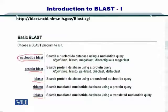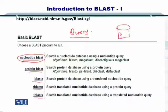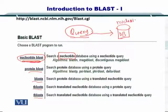For nucleotide BLAST, you simply search for nucleotides. You have a query nucleotide sequence — the query is the sequence that you are trying to search within the database. In the case of nucleotide BLAST, your query sequence is a nucleotide sequence and your database is a nucleotide database. For protein BLAST, your query is a protein sequence and your database is a protein database.